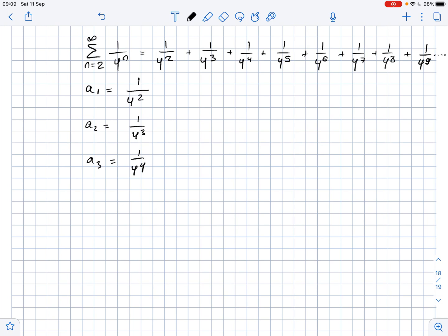If you find the ratio between A2 and A1, you will get that A2 over A1 equals 1 over 4 cubed over 1 over 4 squared, and obviously this equals 1 over 4. Then let's find the ratio between A3 and A2. This equals 1 over 4 to the fourth power over 1 over 4 to the third power. Again, this equals 1 over 4.